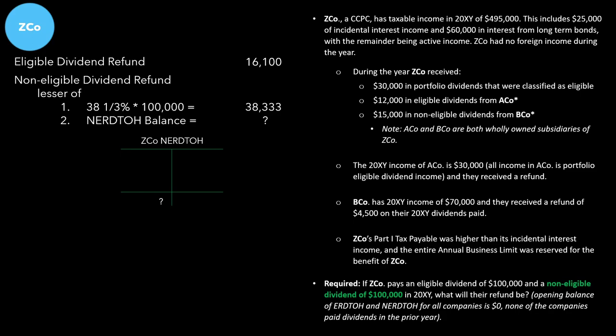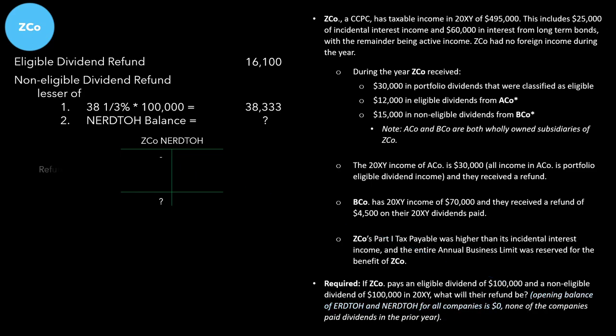The opening balance of all RDTOH accounts for these companies is zero, indicated with a dash. We now will add to the non-eligible RDTOH account the refundable Part 1 tax. The refundable Part 1 tax wasn't given to us — we've got to figure that out too.